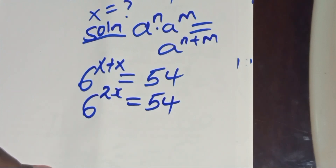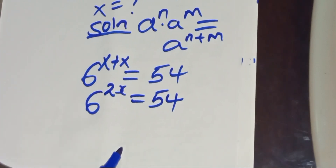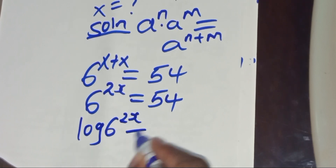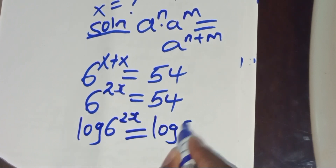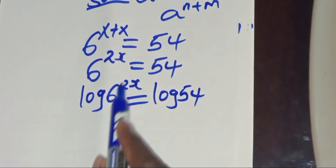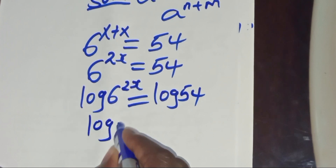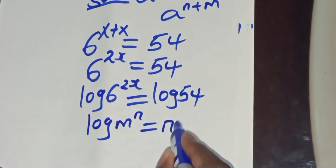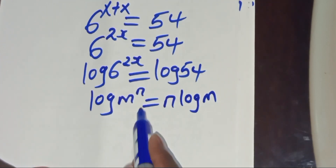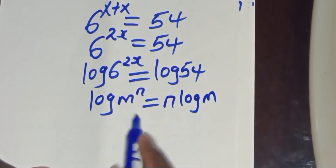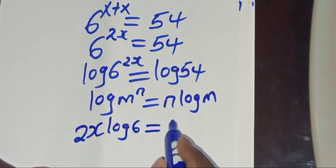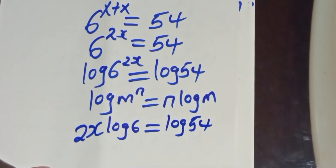Now, to solve for x, we introduce the natural logarithm on both sides. We'll have log(6^(2x)) equals log(54). Now, log(6^(2x)) is in the form of log(m^n), which we can transform as n·log(m). Applying this power property of logarithms, we get 2x·log(6) equals log(54).